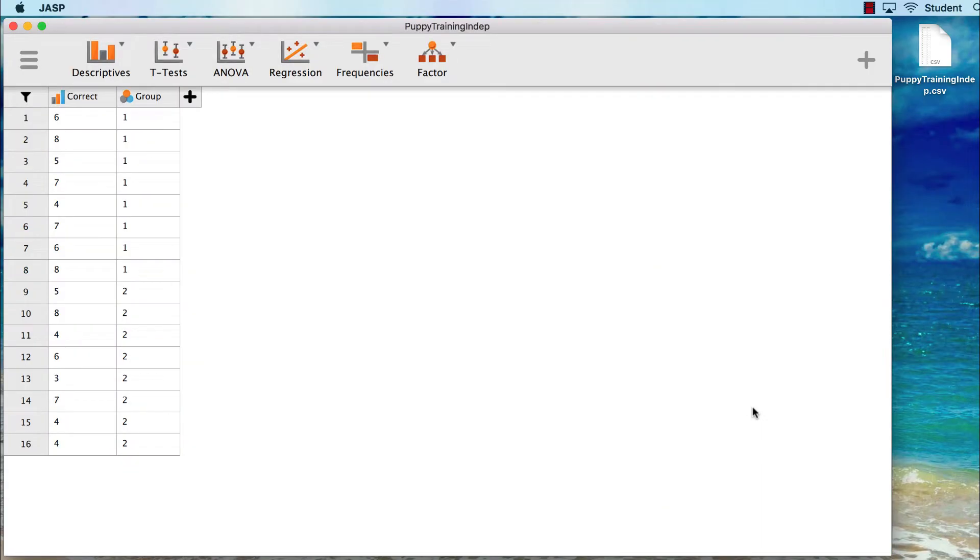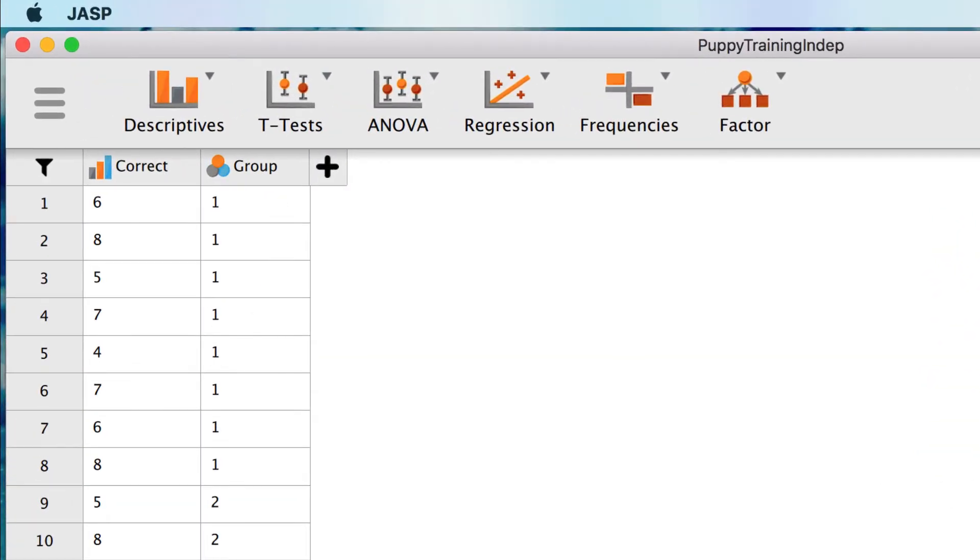Let's begin by looking at our data. The first of the two variables we will see is correct, which is the number of tasks correct out of 10. This was imported as an ordinal variable, but we want to treat it as scale data. On the left edge of the box, we click on click here to change column type and set it to scale.